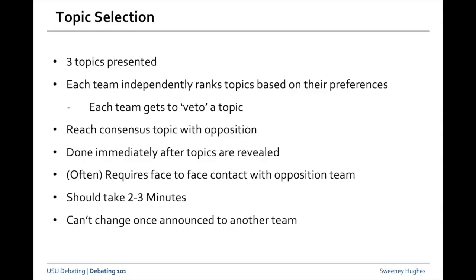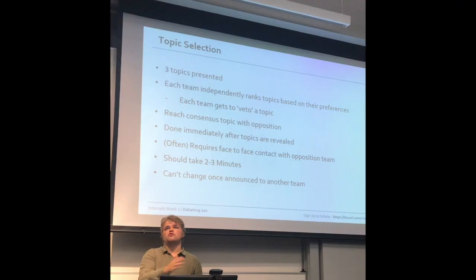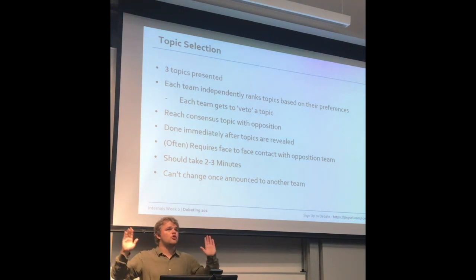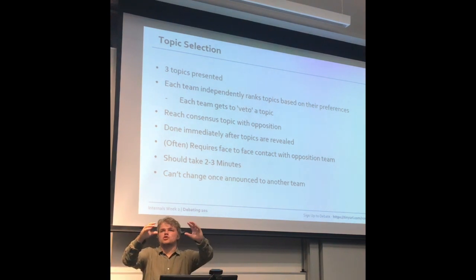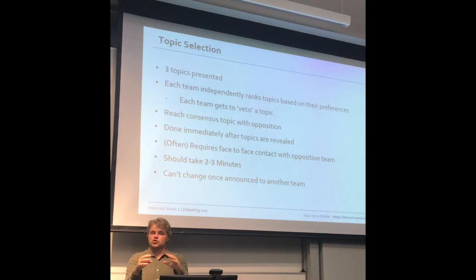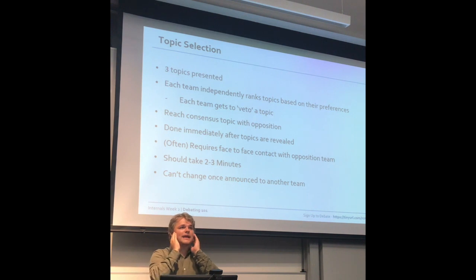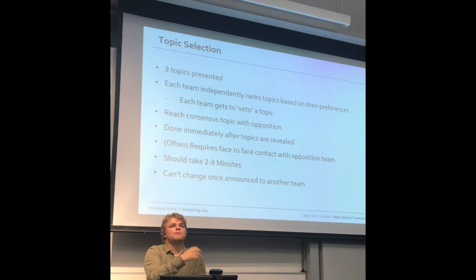Topic selection is something that is definitely new to just about everyone. Effectively, three topics get presented and each team gets to independently rank topics based on their preferences. Each team gets to veto a topic — the one they preference third is automatically rubbed out. Effectively, you're reaching a consensus on the topic with your opposition, and of the three topics presented, you debate the most mutually acceptable one. It's done immediately after topics are revealed and often takes two to three minutes of preparation time.